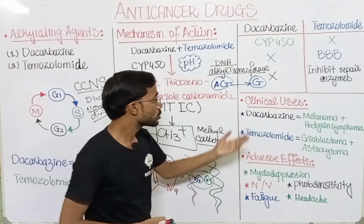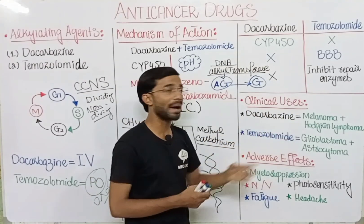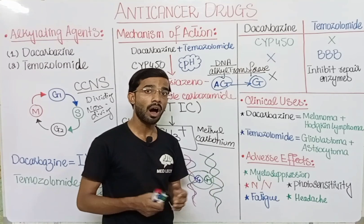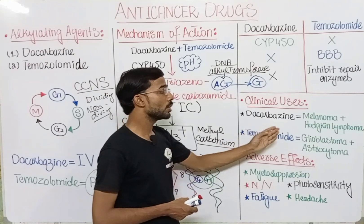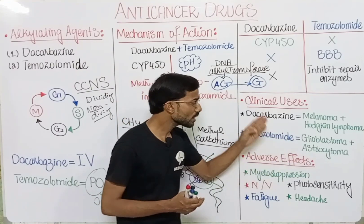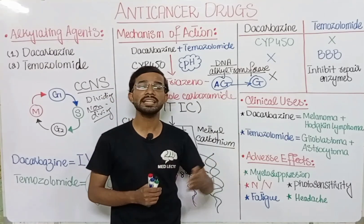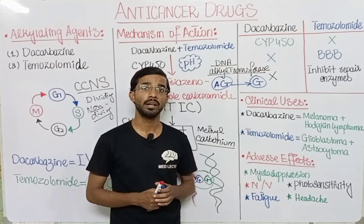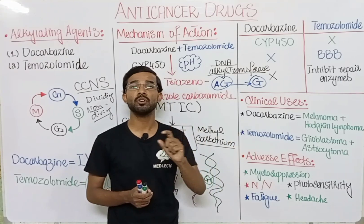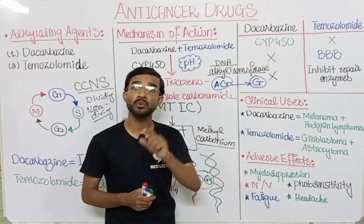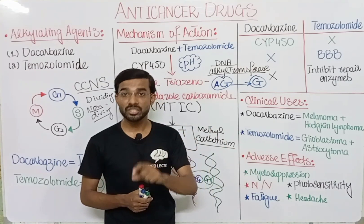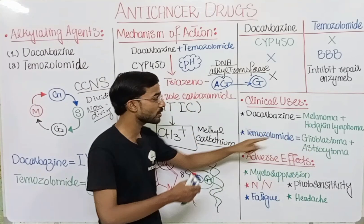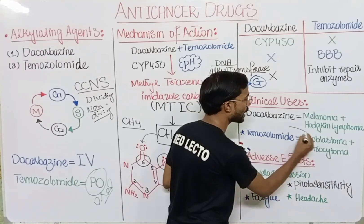Regarding clinical uses: dacarbazine is used in melanoma and Hodgkin lymphoma — Hodgkin lymphoma is characterized by the presence of Reed-Sternberg cells. Temozolomide is used for glioblastoma and astrocytoma. Astrocytoma is graded 1 to 4: Grade 1 Pilocytic, Grade 2 Diffuse, Grade 3 Anaplastic, and Grade 4, also called Glioblastoma.